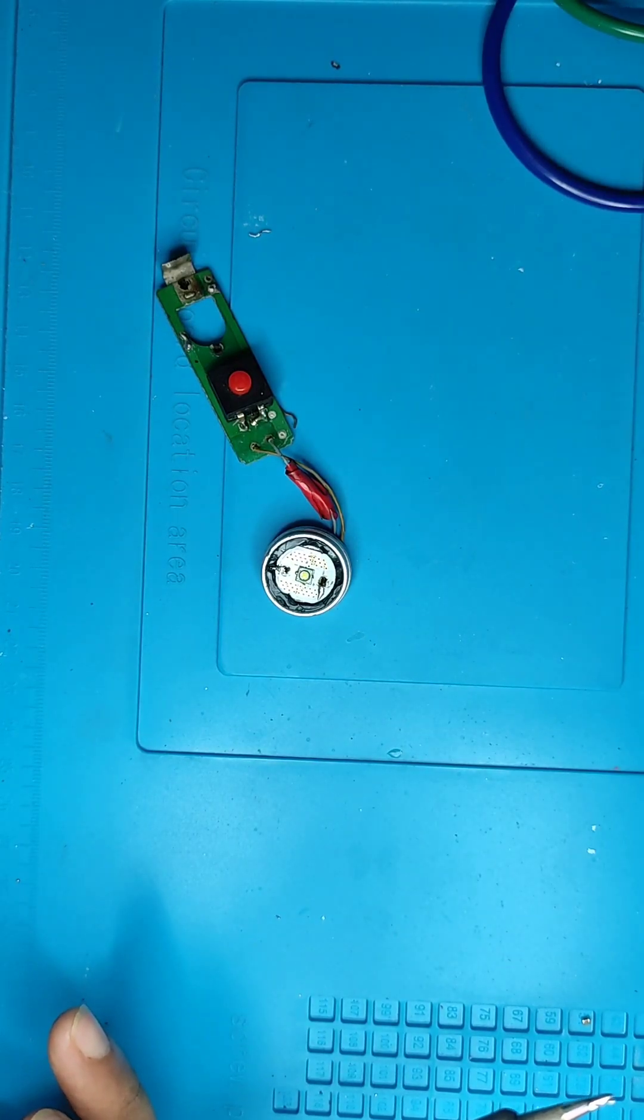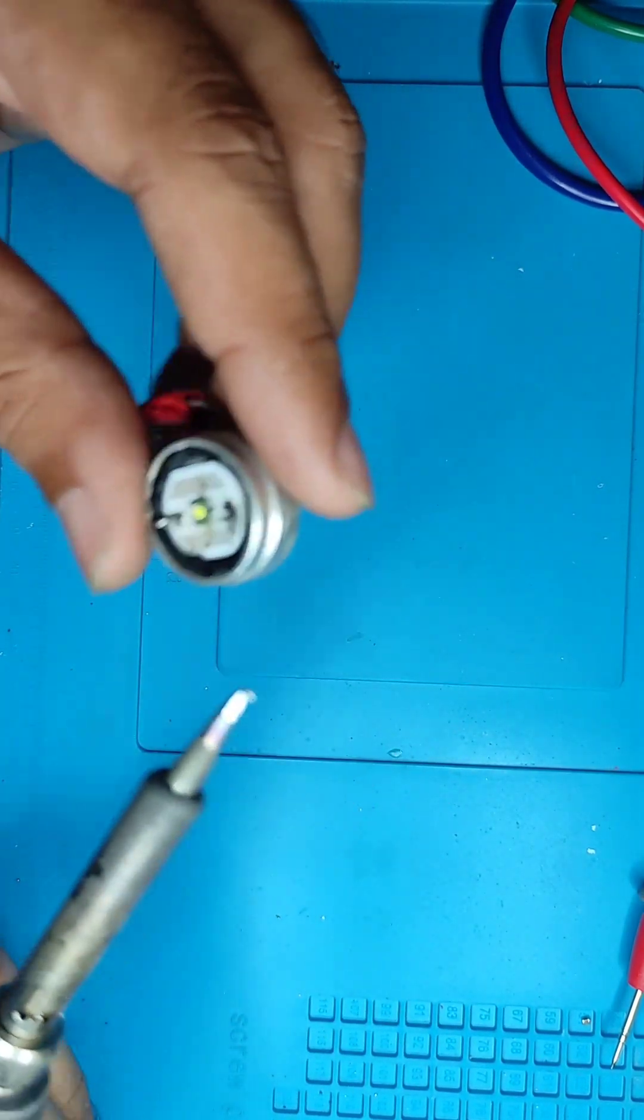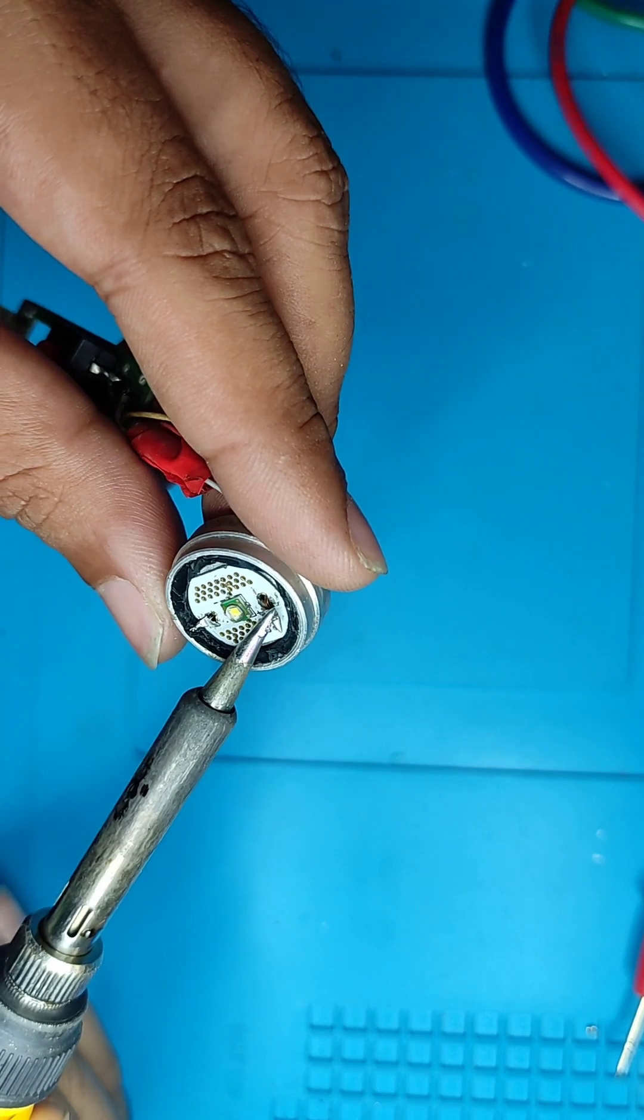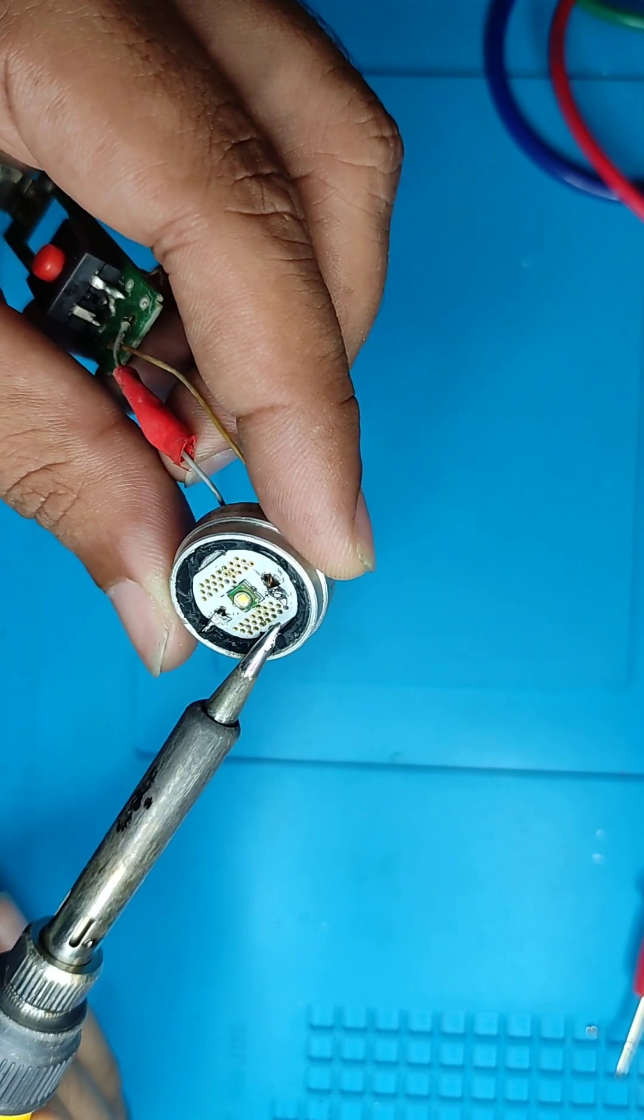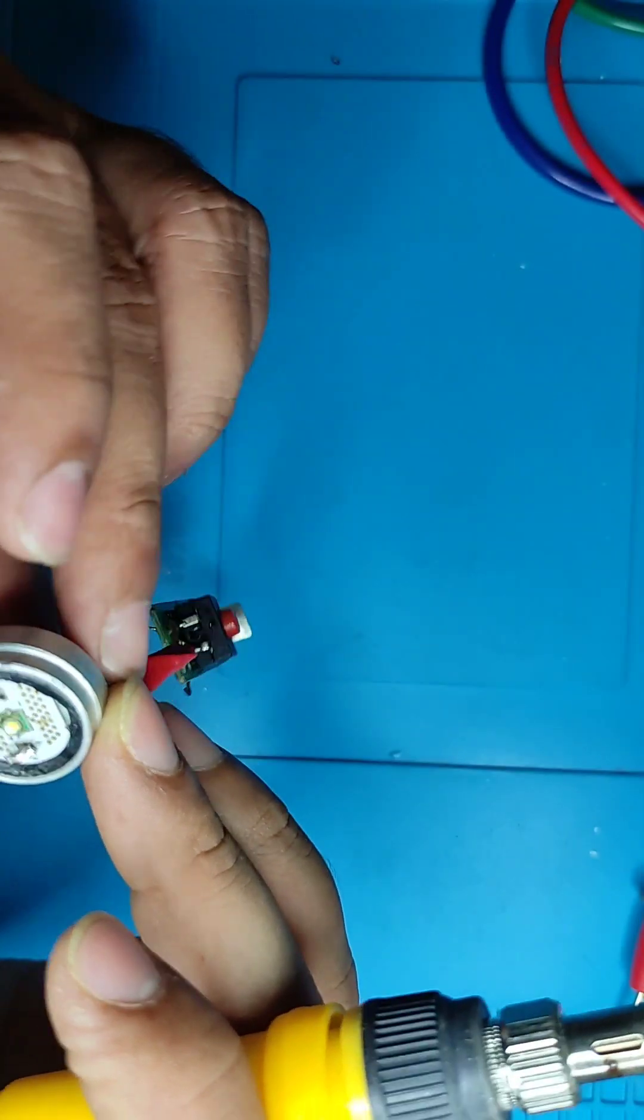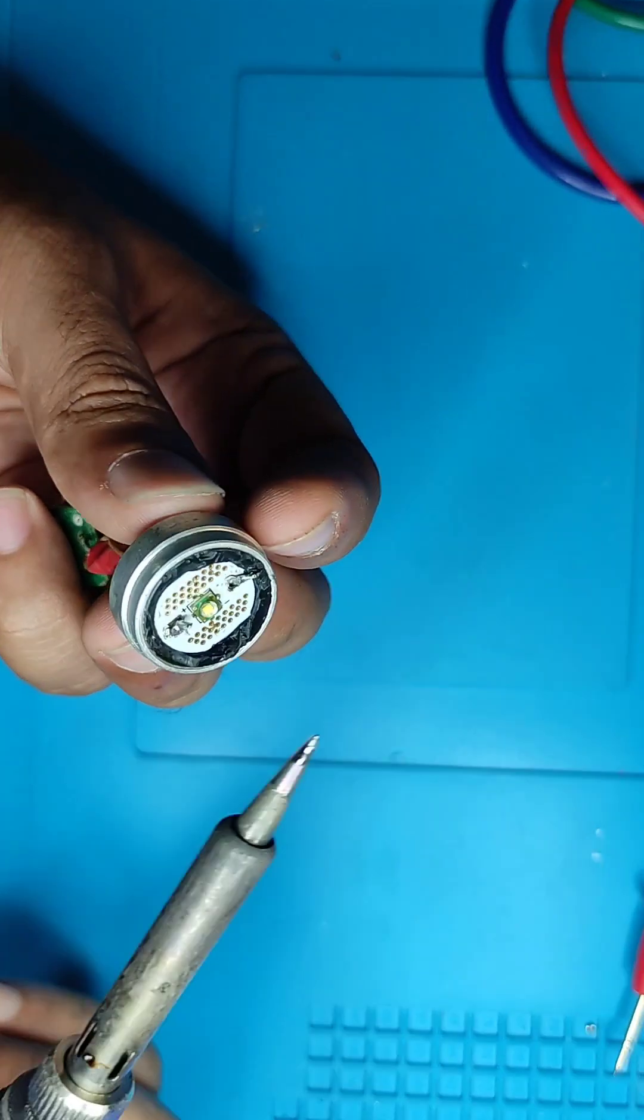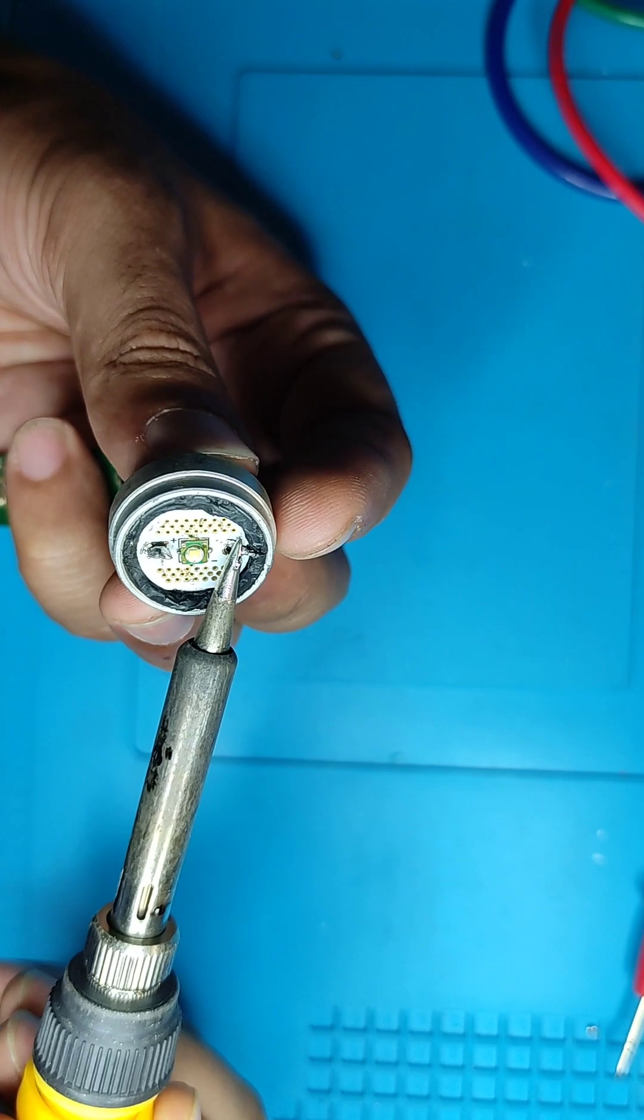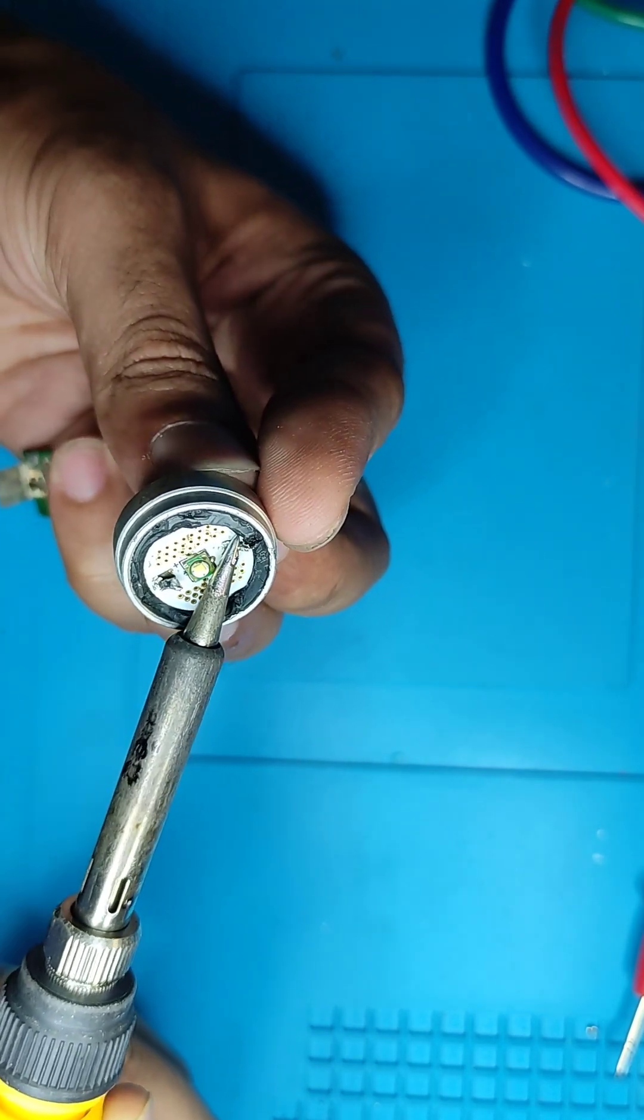So before continuing any further with the test, we need to put a proper connection between the LED and the board. You can see right now there is even a patch in that small length of a wire. So let's remove this old wiring and let's put a proper wiring there.